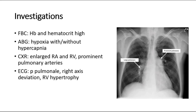These are some of the investigations to detect cor pulmonale. Full blood count will show high hemoglobin and hematocrit levels due to secondary polycythemia. Arterial blood gas analysis will show hypoxia, and it could be with or without hypercapnia.